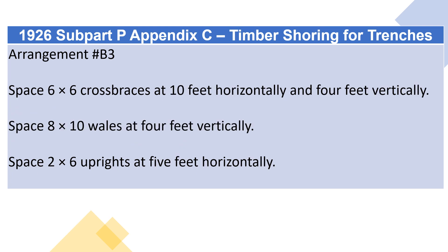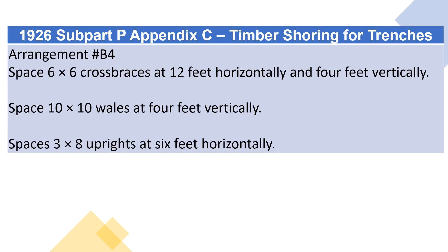Arrangement B3: space 6×6 crossbraces at 10 feet horizontally and 4 feet vertically. Space 8×10 whales at 4 feet vertically. Space 2×6 uprights at 5 feet horizontally. Arrangement B4: space 6×6 crossbraces at 12 feet horizontally and 4 feet vertically. Space 10×10 whales at 4 feet vertically. Space 3×8 uprights at 6 feet horizontally.